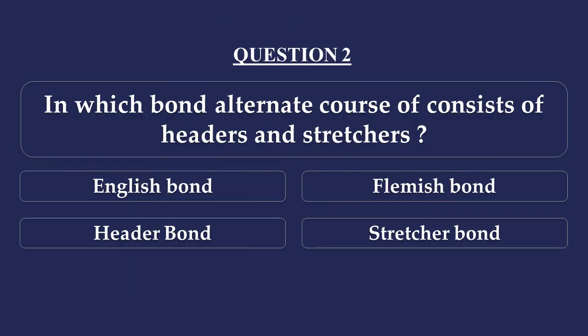Question number 2. In which bond do alternate courses consist of headers and stretchers? Option A - English Bond, Option B - Flemish Bond, Option C - Header Bond, Option D - Stretcher Bond. In this bond we use alternate layers of headers and stretchers — the first layer is headers and the next layer is stretchers. The answer is Option A: English Bond.